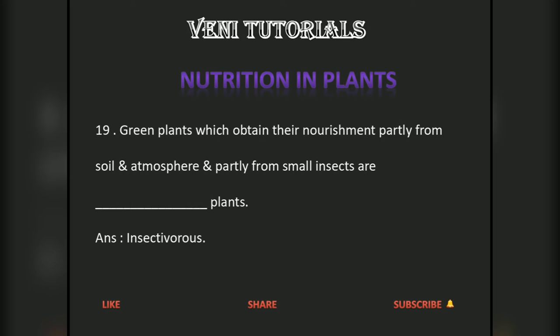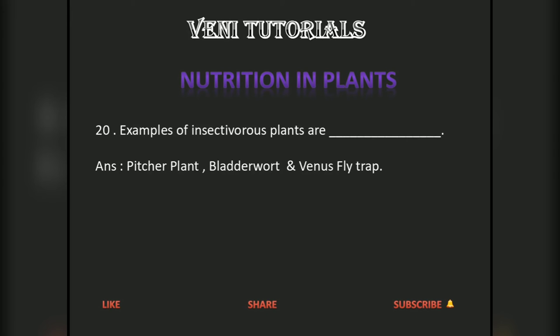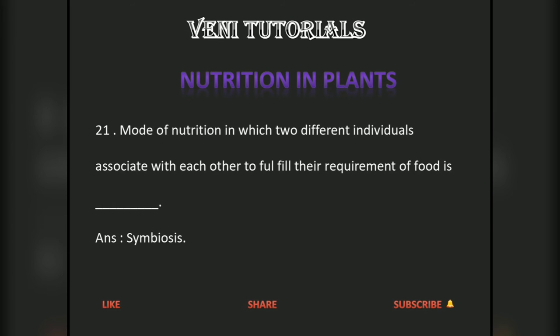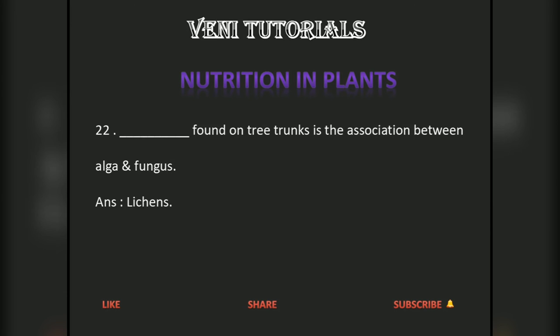Green plants which obtain their nourishment partly from soil and atmosphere and partly from small insects are called insectivorous plants. Examples of insectivorous plants are pitcher plant and bladderwort. Symbiotic organisms include lichens.